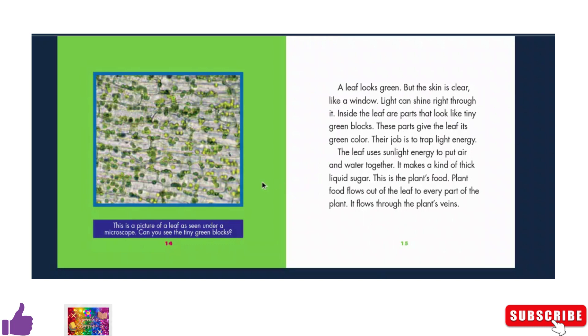This is a picture of a leaf as seen under a microscope. Can you see the tiny green blocks? A leaf looks green, but the skin is clear, like a window.